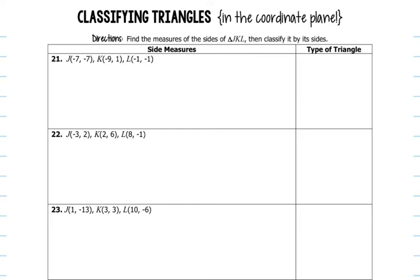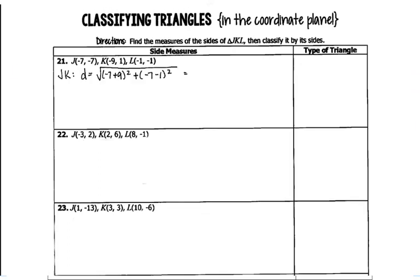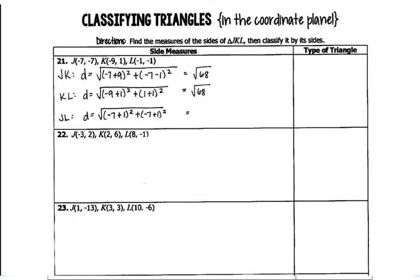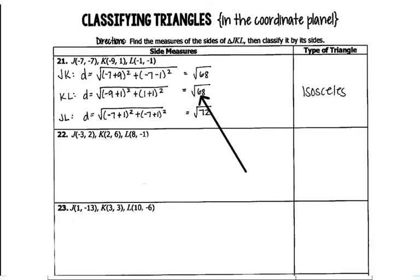For the rest of the questions, we're going to work on side measures using the distance formula for each side length. We plug values into the distance formula and solve. For number 21, you get the square root of 68 for JK, the square root of 68 for KL, and the square root of 72 for JL. Because two sides are the same, it's isosceles. You don't have to put it in your calculator — we're just looking to see if they're the same, not asking for the actual length.